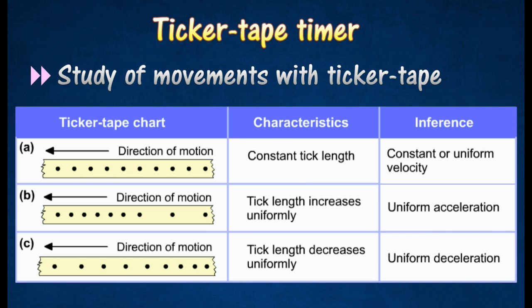Changing distance between successive dots on the ticker tape indicates a changing velocity, and thereby indicates that the ticker tape is accelerating or decelerating.